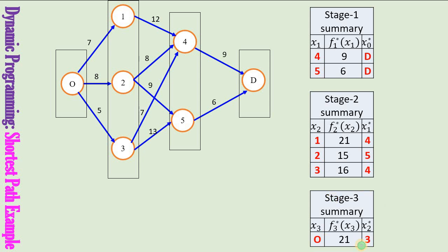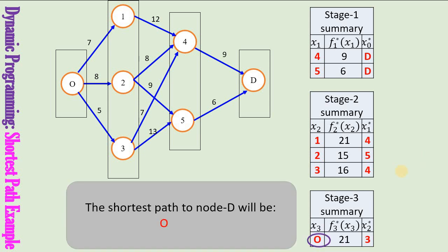Here is the summary of the stage 3 problem. To find the shortest path from node 0 to node D, we trace the solution: starting from node 0, the best end state is 3; starting from 3, the best end state is 4; and starting from 4, the best end state is D. Therefore, the path 0 → 3 → 4 → D is the shortest path from origin to destination.